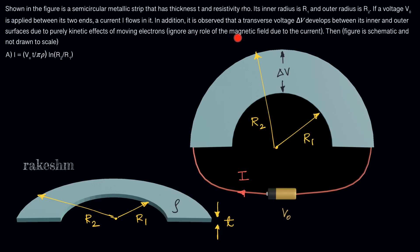We need to ignore any role of the magnetic field due to the current. If there is a current here, it will produce a magnetic field, and the effect of that magnetic field we need to ignore. The figure is schematic and not drawn to scale.